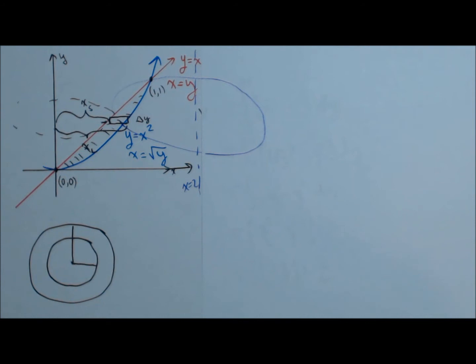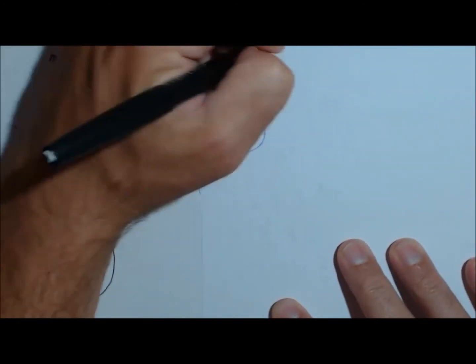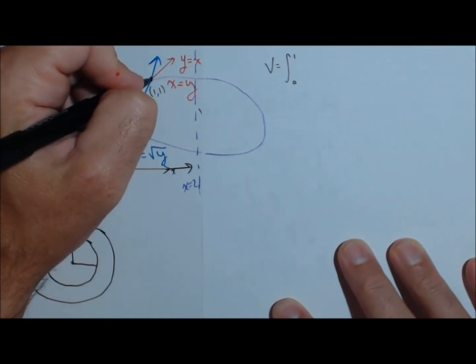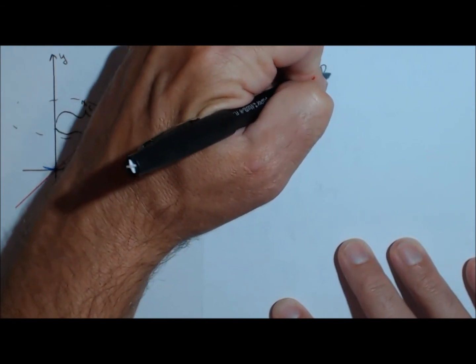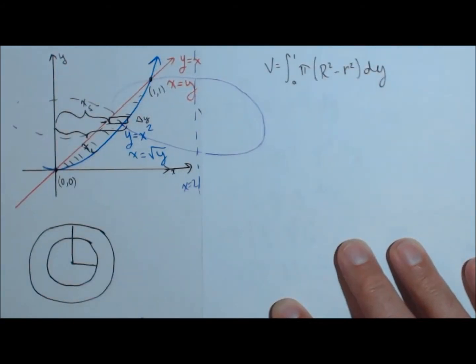Most of this problem will stay pretty much the same in that, looking for the volume, the integral is still going to go from zero to one, because the y values will go from zero to one. It's still going to be pi times big radius squared minus little radius squared dy. The only thing that's going to change is what the big radius and little radius are.